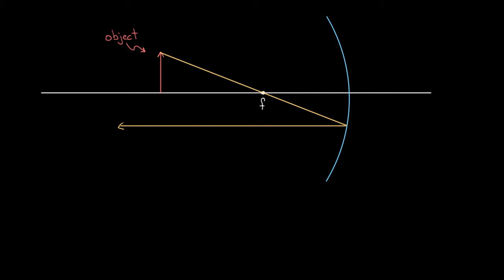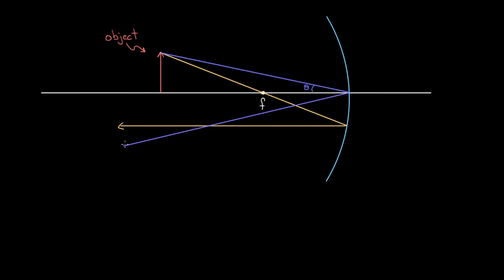I'll draw another ray needed to find where the image is. This white line is called the principal axis — it's drawn through the center of this curved mirror. I'm gonna draw a ray from the tip of the object to that center point, because the law of reflection says the angle in has to equal the angle out, measured from the normal line. This principal axis serves as a perfectly good normal line for the center of the mirror, since it passes through the center perpendicularly. So these two angles have to be the same angle theta, and now I can find where my image is.